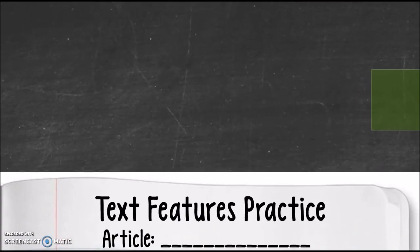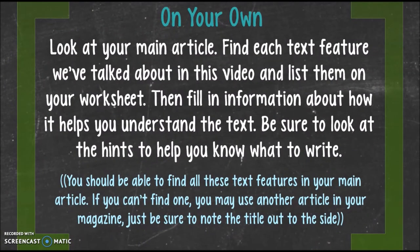Text features. The name of your article. And on your own, you're going to find your main article. Remember, we called it the feature article or the one that it's really all about. Remember, it should not be a one pager. You're going to find each text feature we've talked about in this video and list them on your worksheet. Then fill in information about how it helps you understand the text. Be sure to look at hints to help you know what to write. You should be able to find all these text features in your main article. If you can't find one, you may use another article in your magazine. Just be sure to note the title out to the side. More than likely, you're going to be able to find all these text features. So have fun. May the odds be ever in your favor.